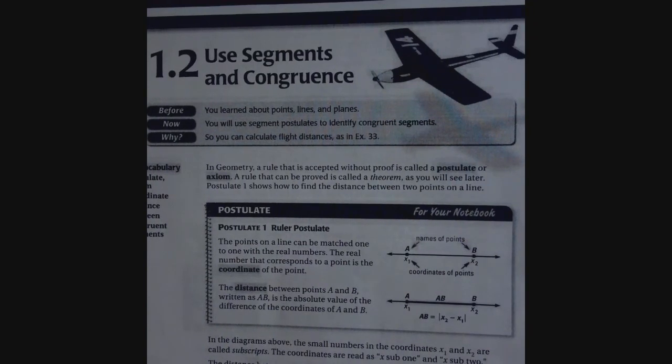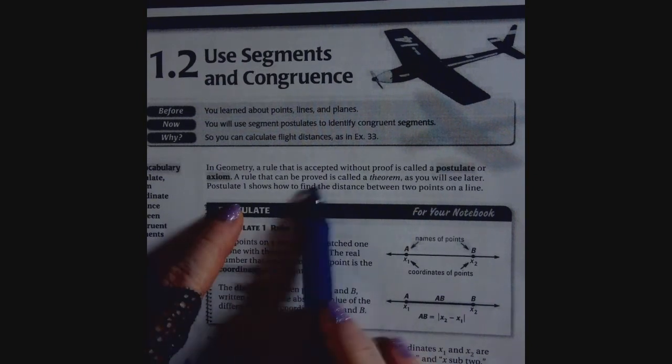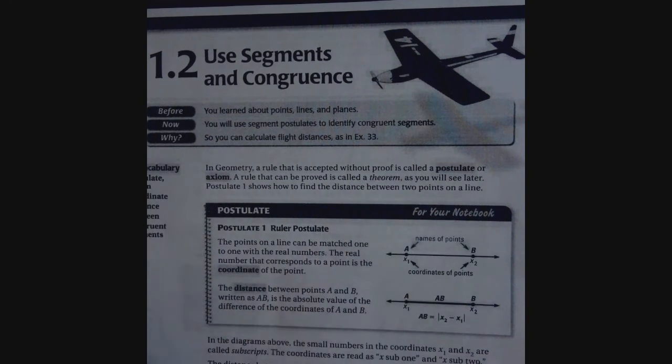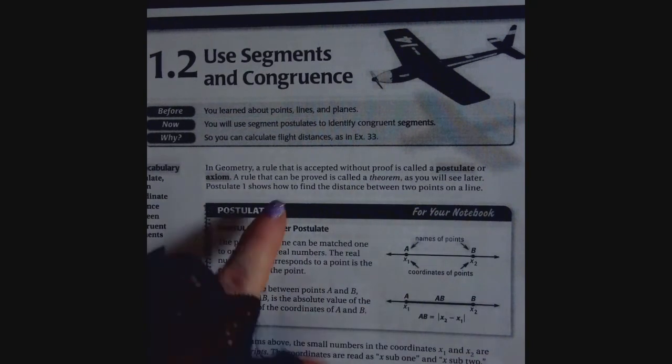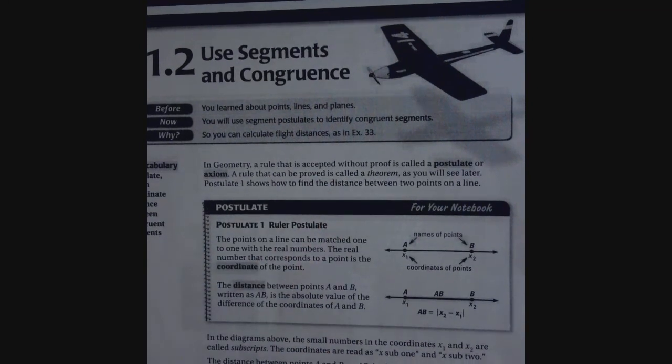Okay, we are on to section 1.2, use segments and congruence. So in geometry, a rule that is accepted without proof is called a postulate or axiom. A rule that can be proved is called a theorem.